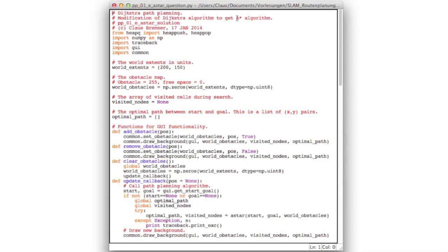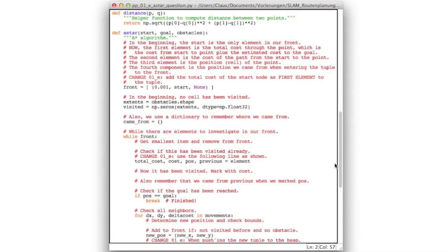Now here's the code in which we'll modify Dijkstra's algorithm to obtain the A star algorithm. Now let's go down to the code. We now have an additional function, a helper function,